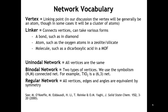And then if we have two different kinds of vertices, we can call that a binodal network. In the last lecture, we talked about the bond graph for TiO2, and we saw that the titanium was six-coordinate and the oxygen was three-coordinate. So we could describe the structures of TiO2 as being made up of six-coordinate vertices and three-coordinate vertices, and that would be a 6-3 binodal net.